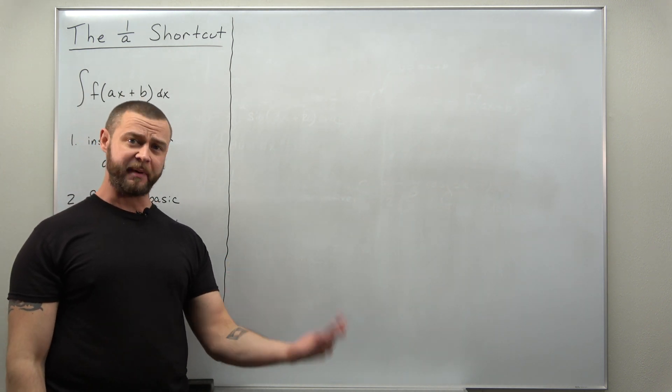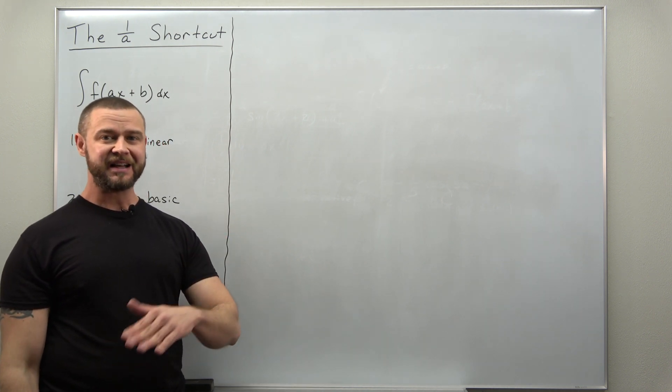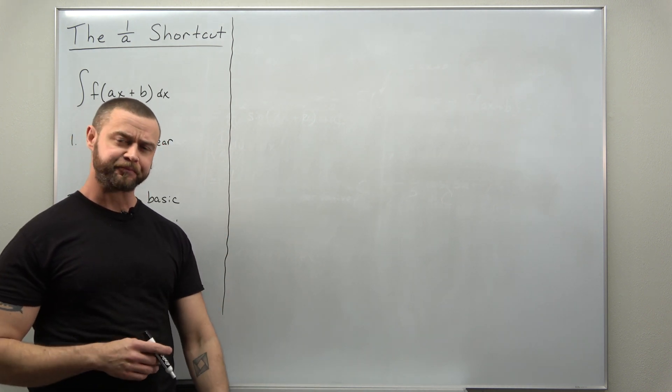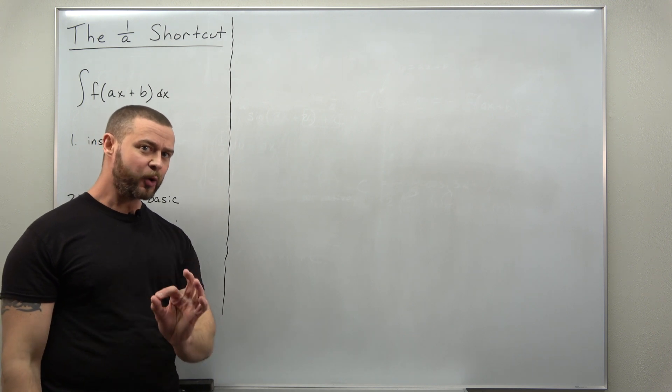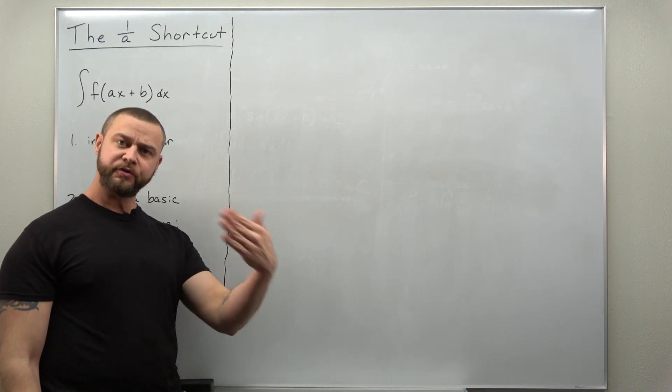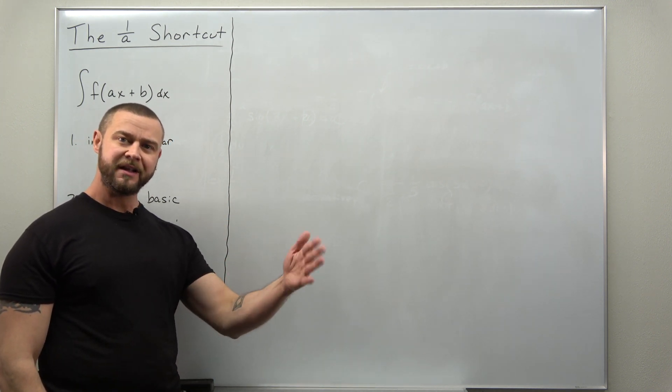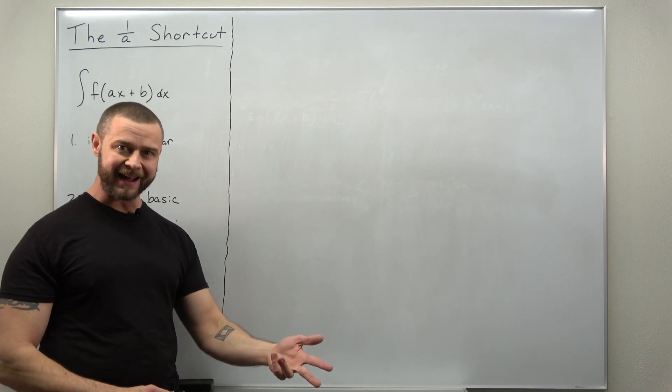So think exponential functions, sines, cosines, things like that. Now again this is a shortcut for substitution so let's take a look at a basic example and see where this 1 over a comes from.